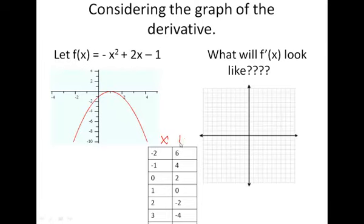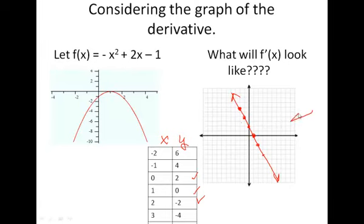We do have the x, y values here, so I'm just going to plot those. Negative 2, 6. Then 0, 2. Here's our critical value. And there we have it. So how can you compare them? When we're looking at this f prime of x function, what I want you to notice is that all up here, these are all positive derivatives — they're all positive slopes.